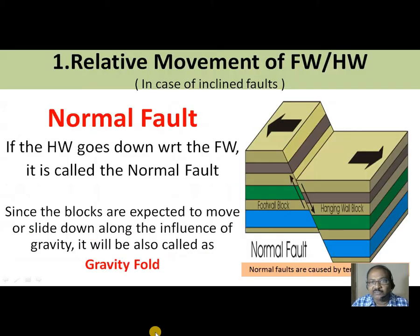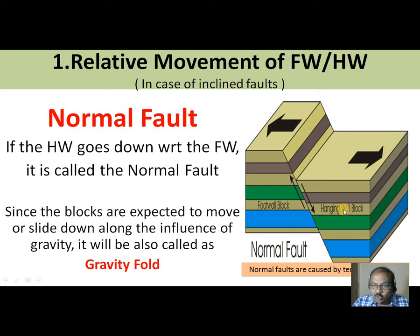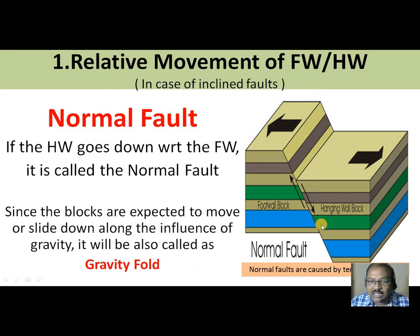Starting with relative movement of footwall and hanging wall — these faults can be identified when the fault plane is inclined. If the hanging wall goes down with respect to the footwall, then it is called a normal fault. The forces acting here are tensile forces. Since the blocks are expected to slide down under the influence of gravity, it is also called a gravity fault.